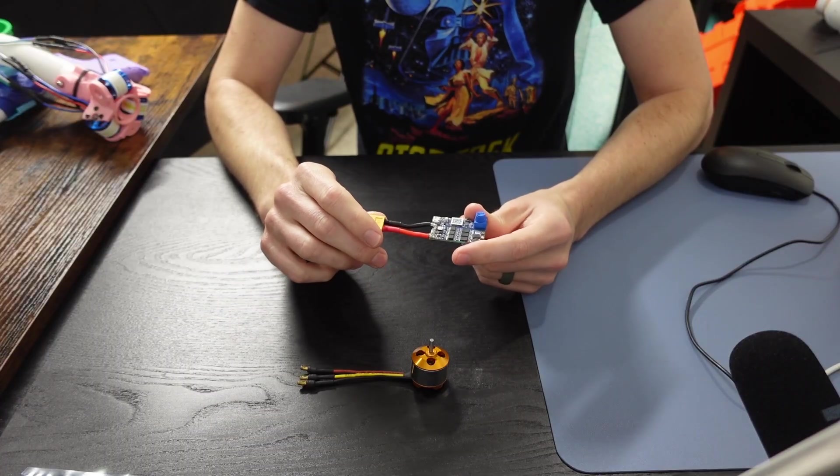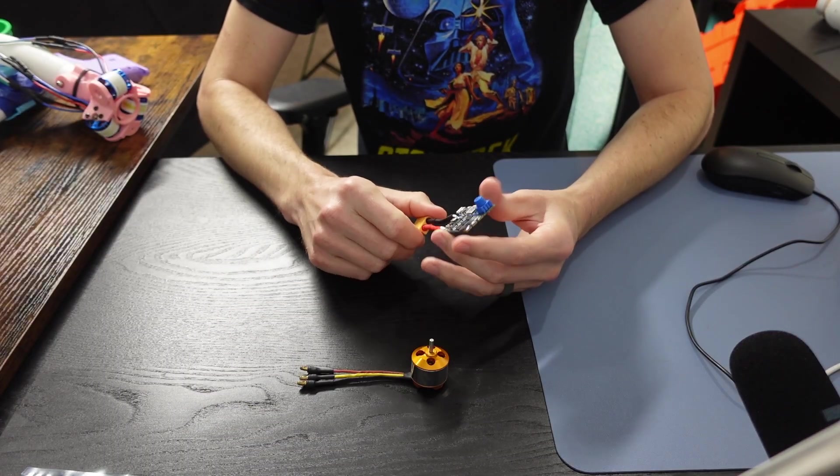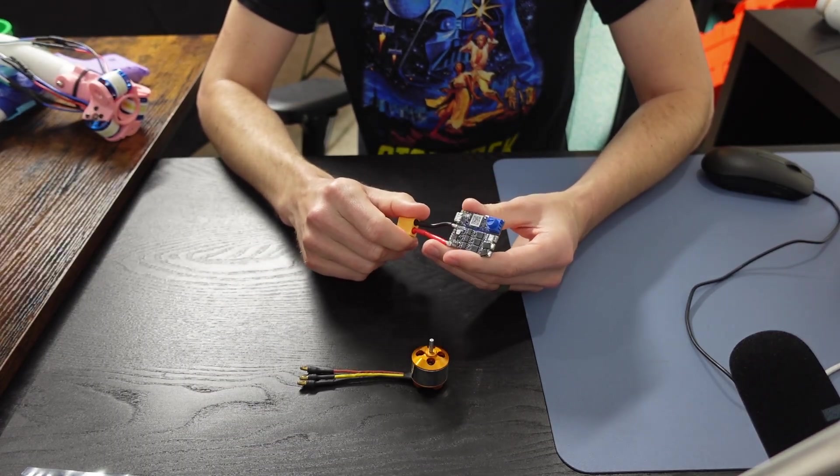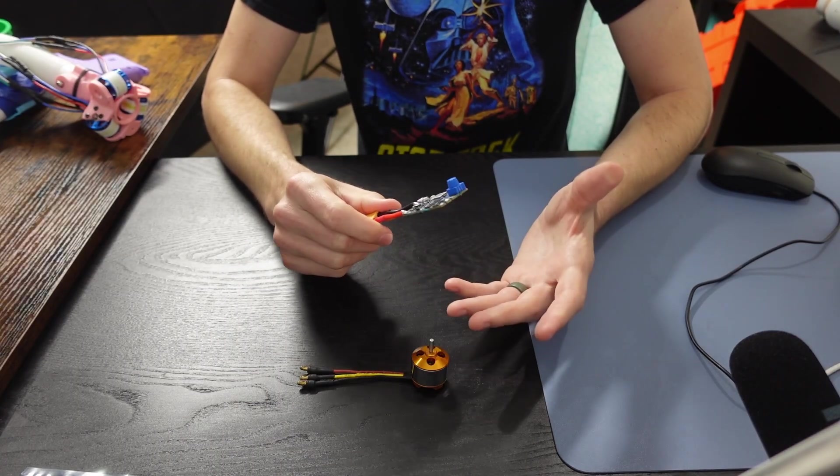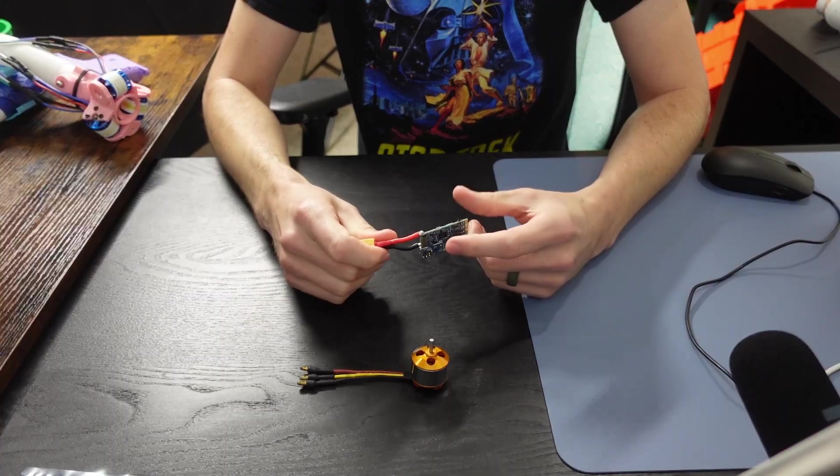it also has low side current sensing, which just means we can indirectly measure how much current is flowing through each phase. And if we characterize the motor, like we did in the last video,